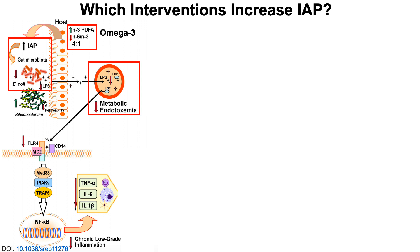They also did experiments inhibiting IAP to confirm its contribution. It was IAP that was driving the changes — less E. coli, less LPS, less gut permeability, and less circulating LPS. With less circulating LPS, there's less binding to TLR4 and less activation of the pro-inflammatory cascade producing TNF-alpha, IL-6, and IL-1-beta. So omega-3 and the IAP story could be good not just for NAD, but also for reducing systemic inflammation.